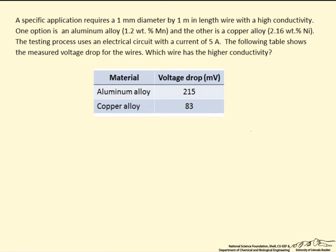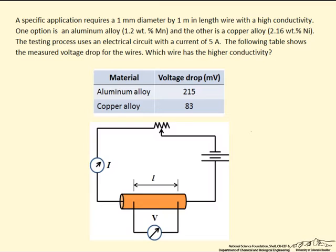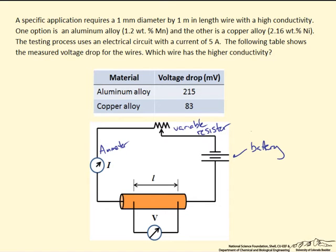With any problem, the best place to start is with a picture. Below here is a schematic of the testing procedure in which we have our battery and our variable resistor. We have our ammeter, which will measure the amps along the circuit, and our voltmeter, which will measure the voltage drop across our material at two specific points. These two specific points have a distance between them designated L.